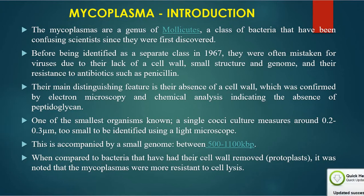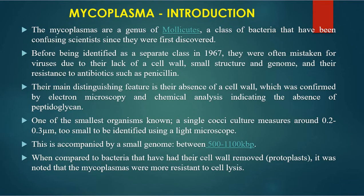Mycoplasma are a class of bacteria that have been confusing scientists since they were first discovered. The existence of mycoplasma as a disease incitant in animals had been known in the 19th century, and contagious bovine pleuropneumonia of cattle was believed by Louis Pasteur to be caused by a specific microorganism that could not be seen or grown in culture. Before being identified as a separate class in 1967, they were often mistaken for viruses due to their lack of cell wall, small structure and genome, and their resistance to antibiotics such as penicillin.